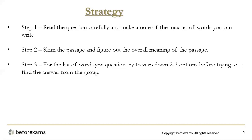For the list-of-words type of questions, try to zero down to two to three options before searching in the text. There will be a list of words given — eliminate options from that list. Many times you can find the correct option just by guessing without looking at the passage, but zeroing down to two or three options means that when you skim and scan the passage, finding the answer becomes much easier.